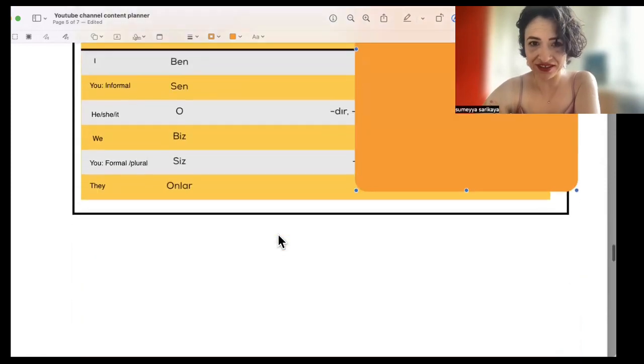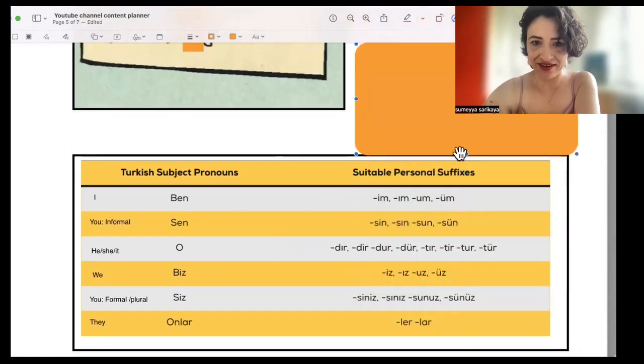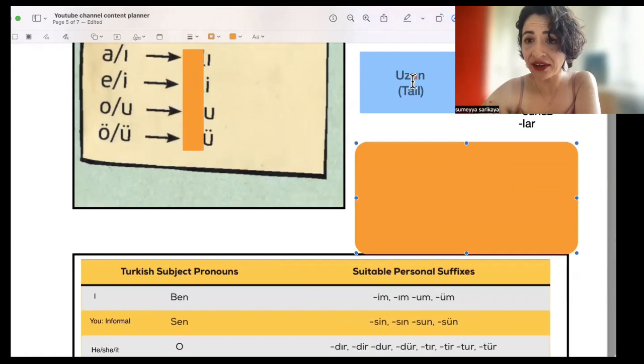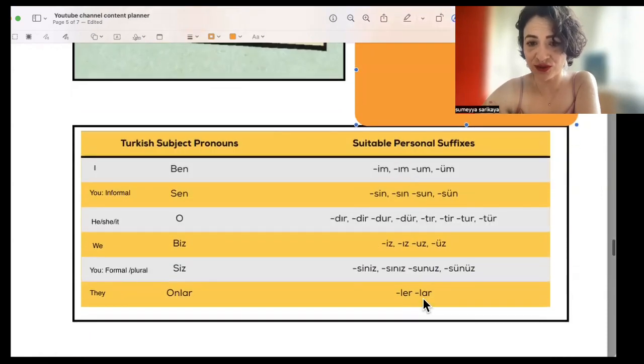So here is the list of the suffixes. You just choose the one that contains u vowel. And because o, u, ı and a, they're hard vowels, you will choose lar for onlar.